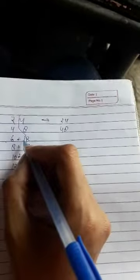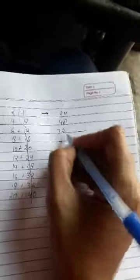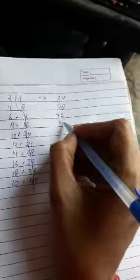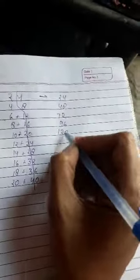plus 1 equals to 7, 72, 8 plus 1 equals to 9, 96, 10 plus 2 equals to 12, 120.